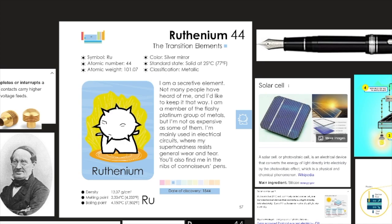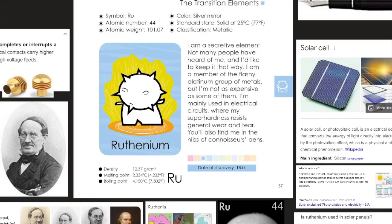Element number 44, symbol Ru, atomic number 44, atomic weight 101.07, its color is a silver mirror, its standard state is solid at 25 degrees Celsius or 77 degrees Fahrenheit, its classification is metallic. I'm a secretive element. Not many people have heard of me, and I'd like to keep it that way. I'm a member of the flashy platinum group of metals, but I'm not as expensive as some of them. I'm mainly used in electrical circuits, where my super hardness resists general wear and tear. You'll also find me in the nibs of connoisseur pens.